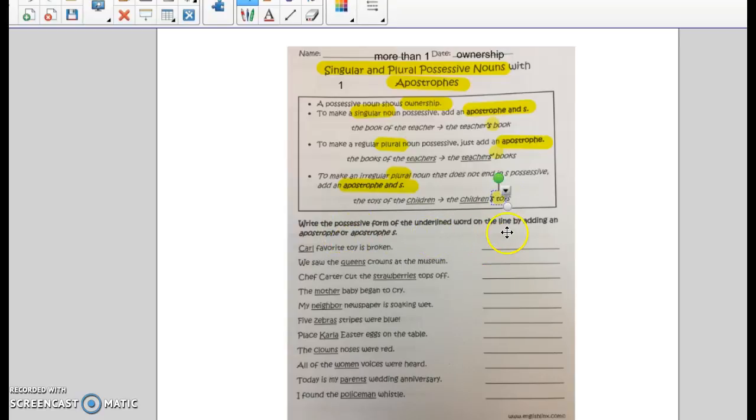Okay, so write the possessive form of the underlined word on the line by adding an apostrophe or an apostrophe S.